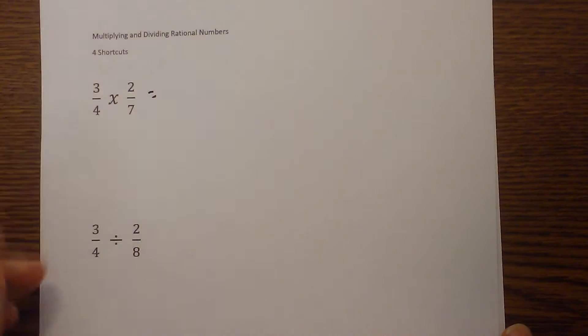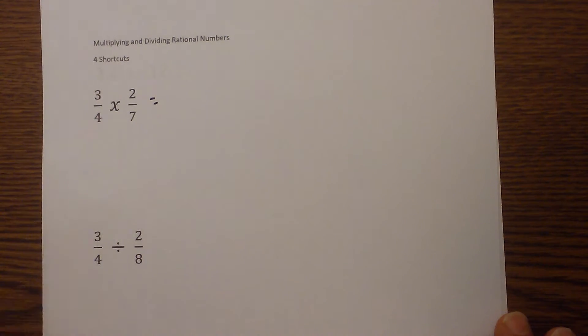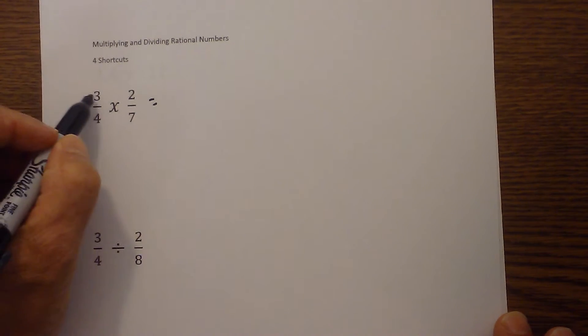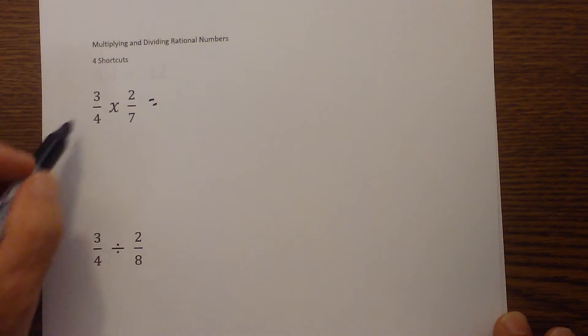I'll try to give a couple tips or shortcuts. First off, whenever you multiply fractions, you just multiply the numerator and the denominator straight across.